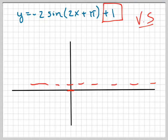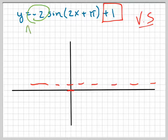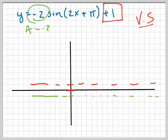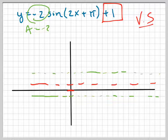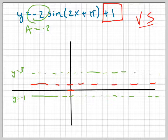My amplitude is negative 2, so it's going to go down as far as negative 1. I'll put a dotted line — it's going to go up as far as positive 3. If you want to write in y equals 3 and y equals negative 1, you can do that just to help you out, but you don't necessarily need to.